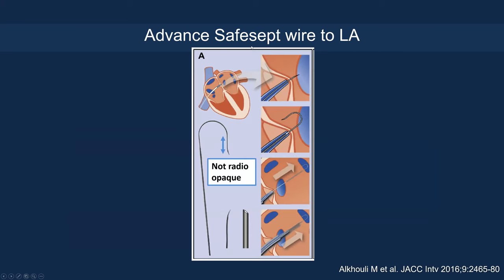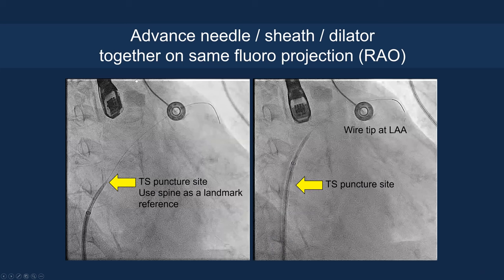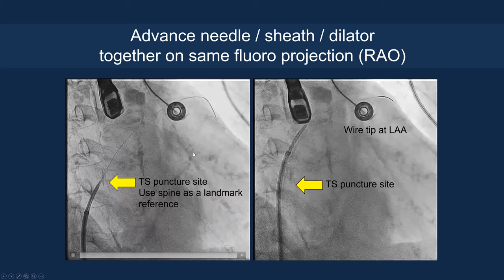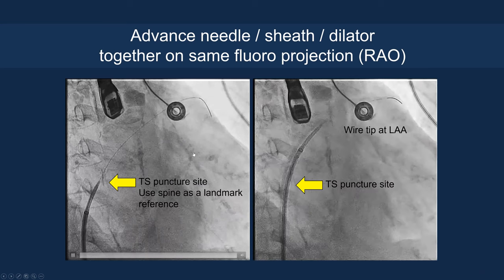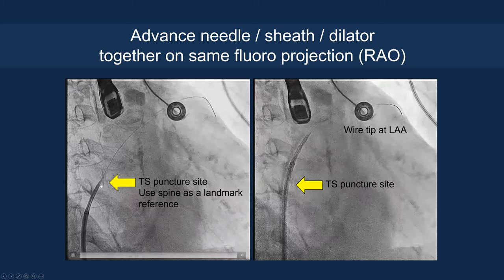This shows advancing the SafeSept wire to the left atrium — it is a mechanical, very fine, atraumatic needle. You can do this mechanically or with the Baylis radiofrequency needle. Once you puncture, perform an x-plane of the aortic root short axis to confirm you are in the mid-septum. You can see the trajectory of the wire across to the left atrium. Advance the needle and sheath dilator together on the same fluoroscopic projection, noting the transeptal puncture site, then advance the sheath knowing you are in the left atrium.